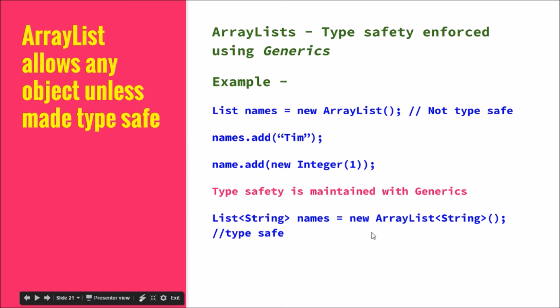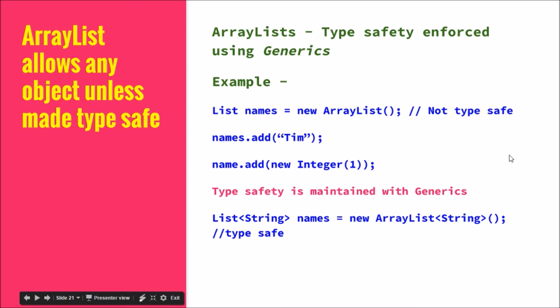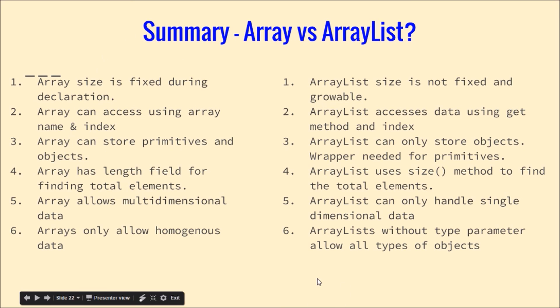So now with generics, it will not allow you to enter integers, doubles, or anything else — only strings. This is called type safe. The default implementation without a type parameter is not type safe. Arrays only allow one kind of data based on the declaration type. These are the six differences, and here is a summary — you can pause the video and go through the list again.